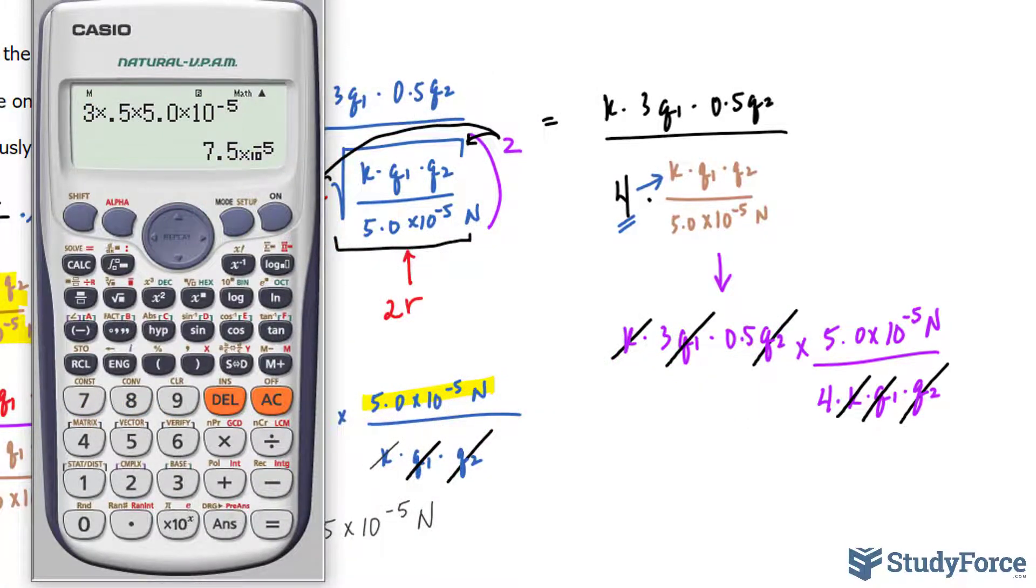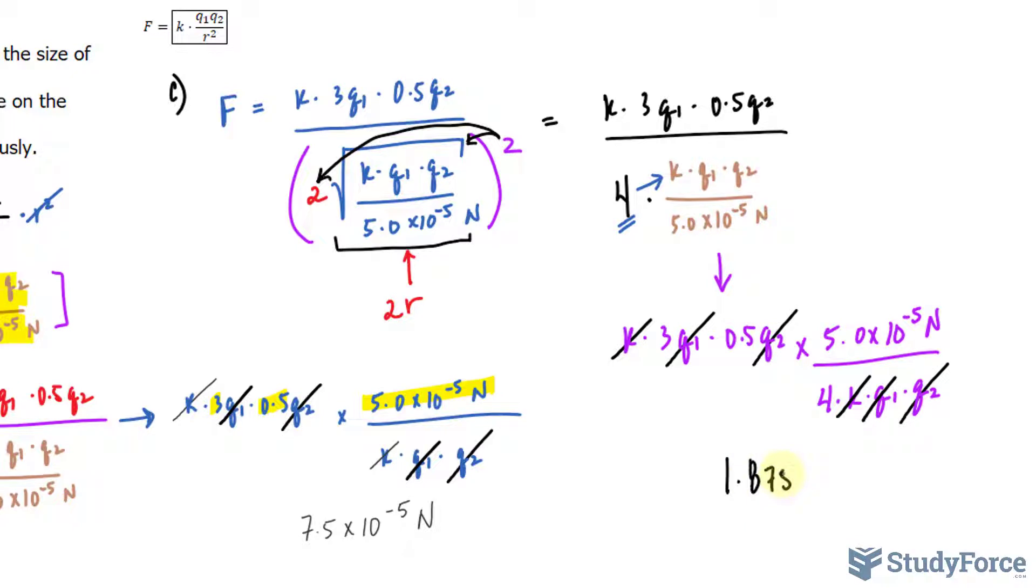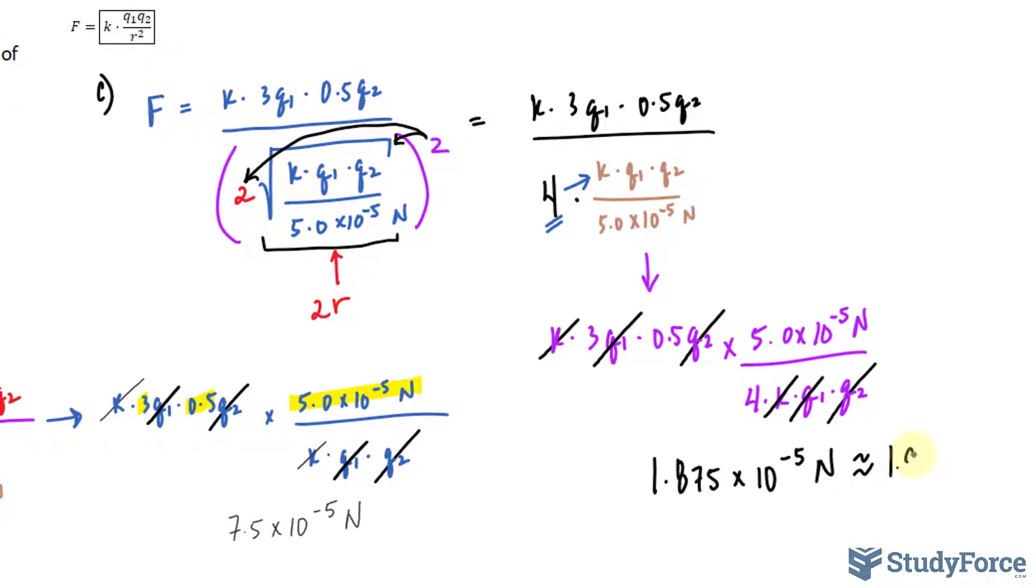So, it is the number on your screen divided by 4. And you end up with 1.875 times 10 to the power of negative 5 Newtons. And of course, you can reduce that down to two significant figures if you like, which would be 1.9. Therefore, if we apply what is in Part A and Part B simultaneously, the force decreases from 2.5 to 1.9 times 10 to the power of negative 5.